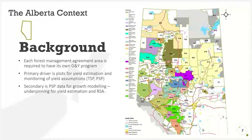For folks not from Alberta, I want to give a bit of context. In Alberta, the majority of working forests are divided into area-based tenures called forest management agreement areas — that's the map you're seeing on your right here. Each FMA area is required to have its own growth and yield program, with the primary driver being to collect enough plots to create yield estimates, monitor yield assumptions, using a combination of temporary and permanent sample plots.